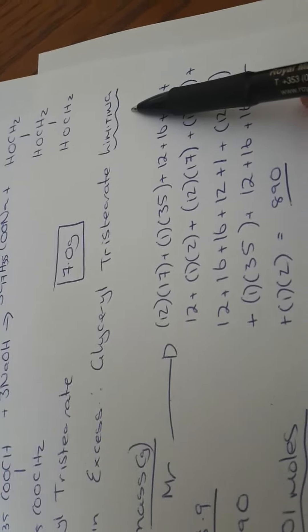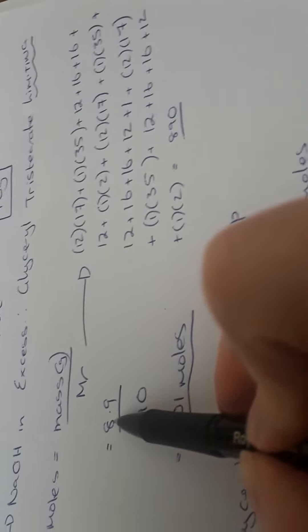So that means my glycerol triciarate must be my limiting reagent. I'm told in the question that I have 8.9 grams and I have to work out my relative molecular mass of my glycerol triciarate. So 12 by 17 plus 1 by 35 plus 12 plus 16 plus 16 plus 12 plus 1 by 2 plus 12 by 17 plus 1 by 35.